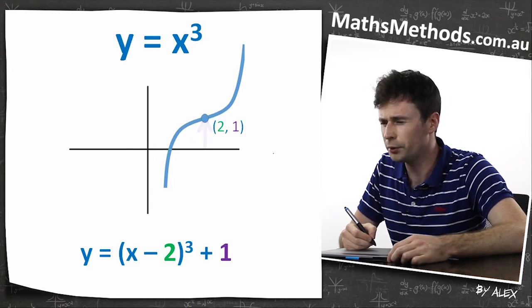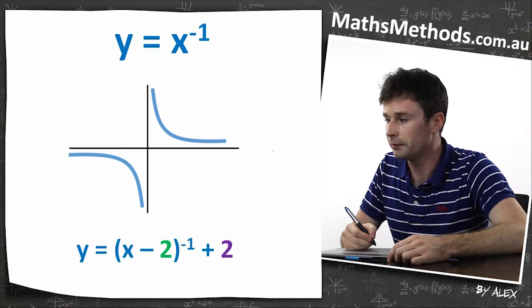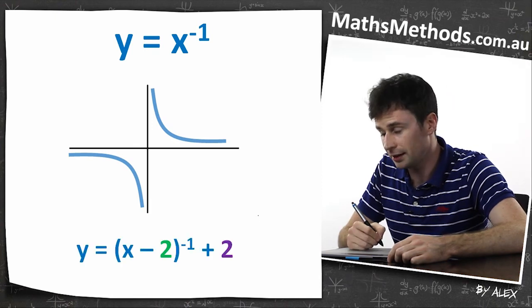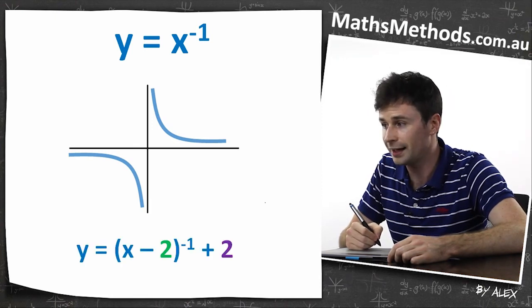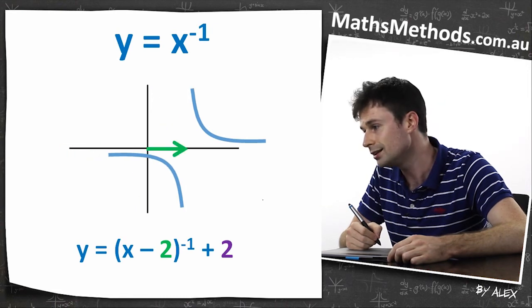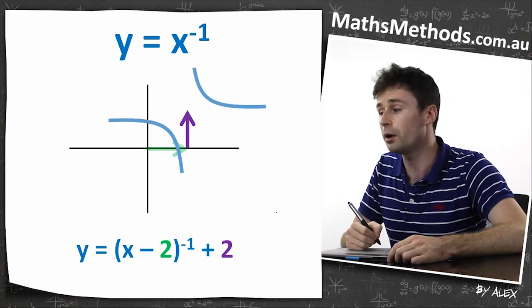Put in the turning point. Same deal with this one, this is y equals x to the negative one. But if you have it in this form where you've got negative two on the x, it means you move it two over, and then plus two means you move it two up as well.